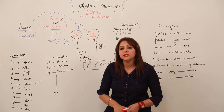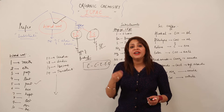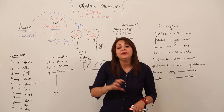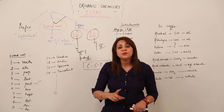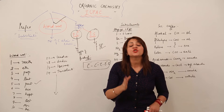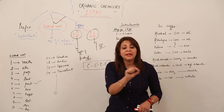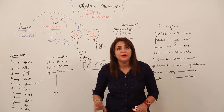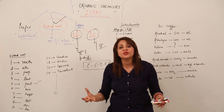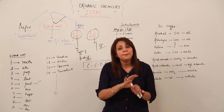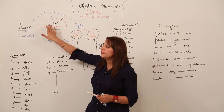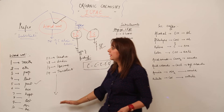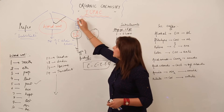One important thing: it is not compulsory to count all the carbon atoms present in the organic compound. The carbon atoms that specify the word root are only those included in the parent chain. Make a note: we are talking about carbon atoms in the parent chain only, not substituent carbons or any carbon outside the parent chain. So just count the carbons in the parent chain and use the corresponding word root.